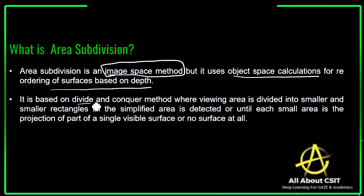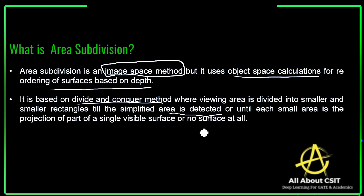Area subdivision is based on the divide and conquer method, where the viewing area is divided into smaller and smaller rectangles until the simplified area is detected. The viewing area is divided into smaller and smaller rectangles until each small area is the projection of part of a single visible surface, or no surfaces at all.